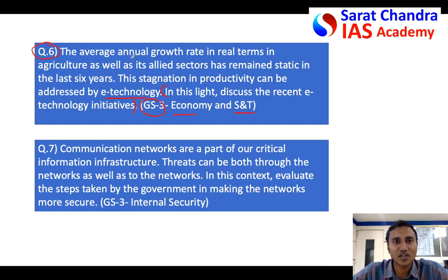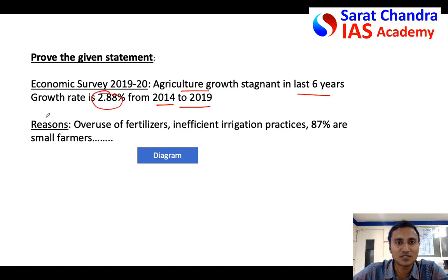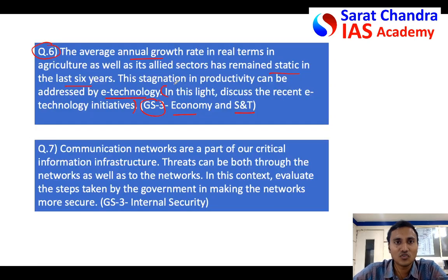The first statement says the average annual growth rate in real terms in agriculture has remained static in the last six years. This statement is taken from Economic Survey 2019 and 2020, which states that agriculture growth has been stagnant. Between 2014 to 2020, the growth rate of agriculture was less than 3% consistently, meaning productivity of agriculture has been seriously hampered.